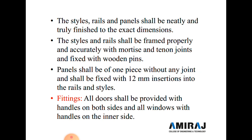The style, rails, and panels shall be neatly and truly finished to the exact dimensions. The style and rail shall be framed properly and accurately with mortise and tenon joints, fixed with wooden pins. The panel shall be one piece without any joint, fixed with 12 mm insertion into the rails and styles. All doors shall be provided with a handle on both sides.